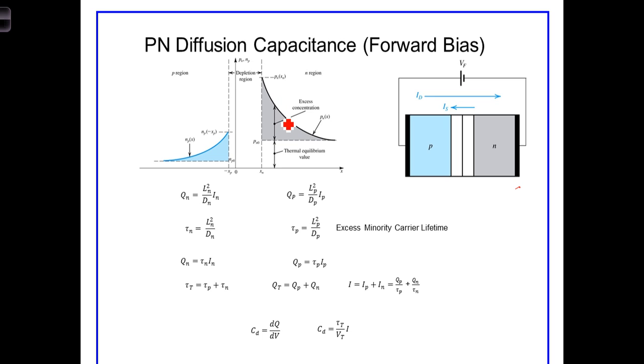As the minority carriers continue to diffuse away from the junction, they begin to recombine with the majority carriers as is seen by the exponential decay of the excess concentrations.